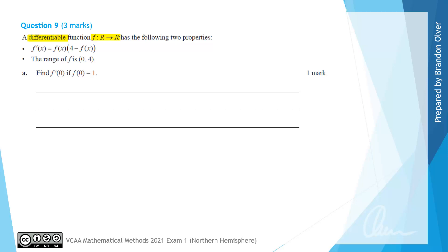Part A asks us to find f'(0) if f(0) is equal to 1. So if we want to evaluate f'(0) using the first line of what we're told, that is just going to equal f(0), so we just replace x with 0, times 4 minus f(0), and then we're told that f(0) is equal to 1, so that's given in part A.